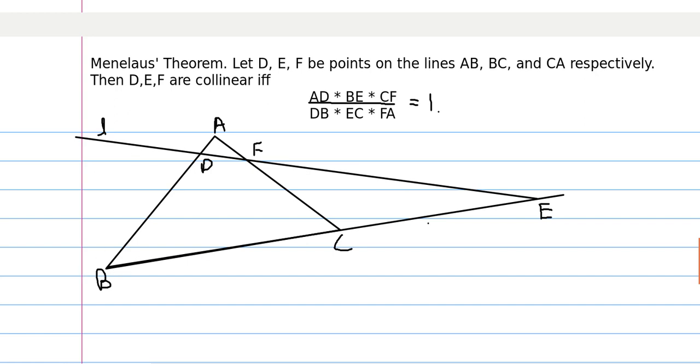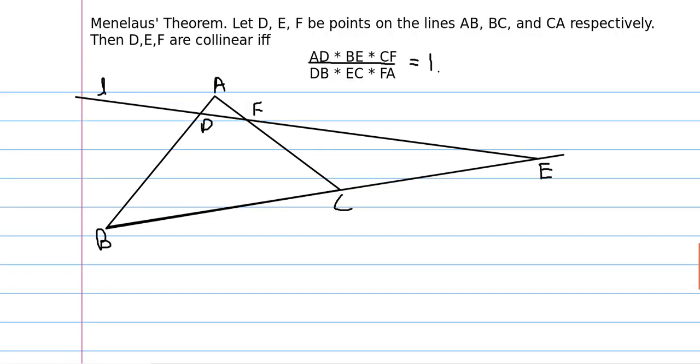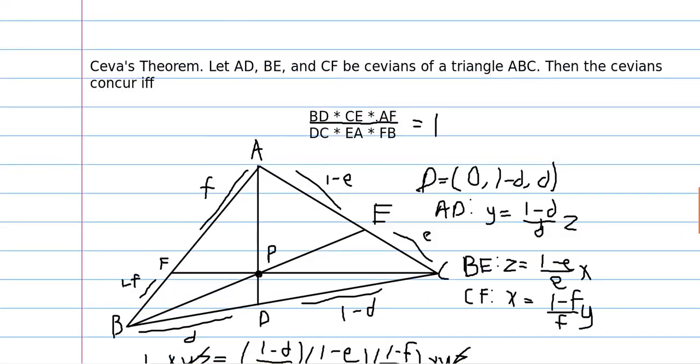So always you will have to have one of these lines extended so they're not just points on the side of a triangle but you have a triangle and you extend their lines. Anyway then the points D, E, and F are collinear if and only if the product of these ratios equals one, so it's very similar in heart to Ceva's theorem.